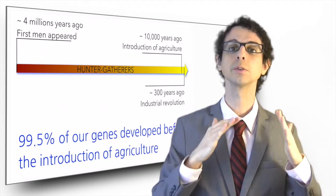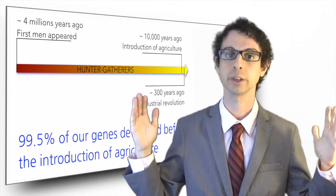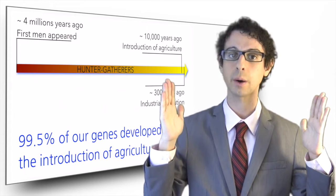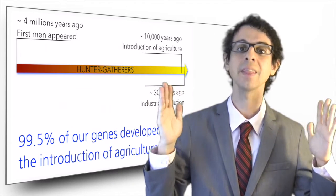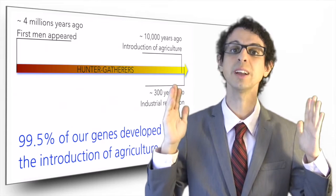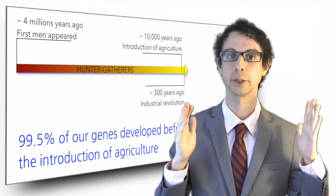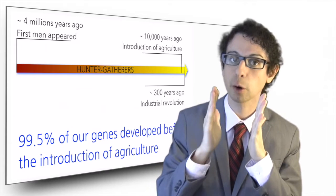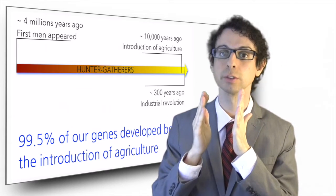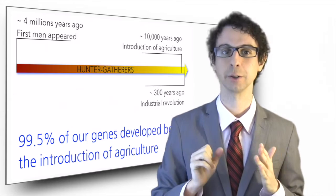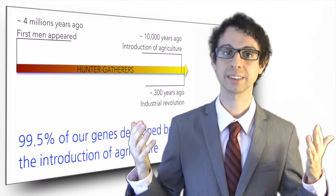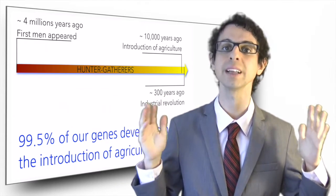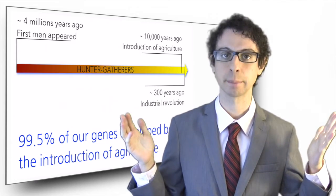If we were to scale the entire course of human history to fit one 24-hour day, men were hunter-gatherers for the first 23 hours and 56 minutes. The agricultural revolution occurred in the last four minutes, and the industrial revolution in the last seven seconds. On an evolutionary scale, our genes have barely had the time to realize that something even happened.